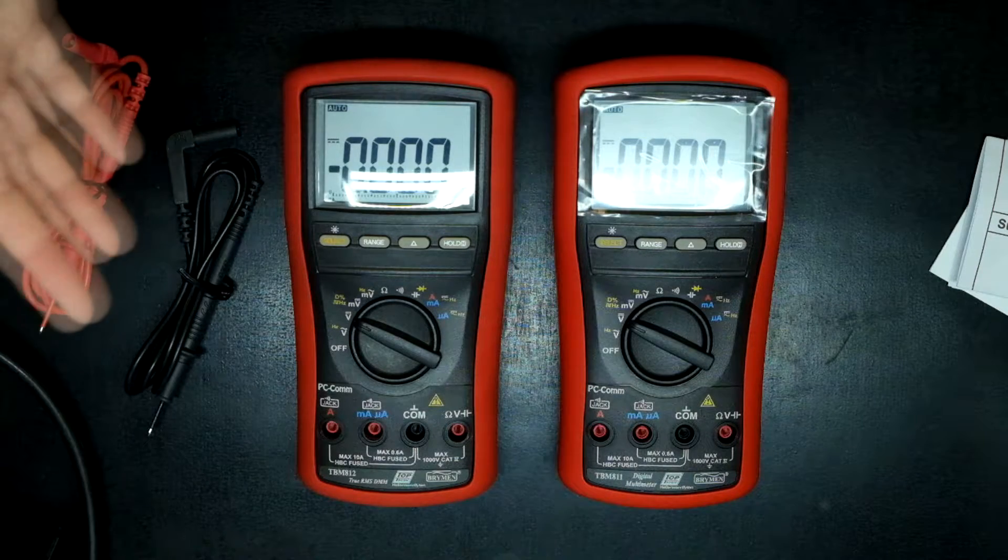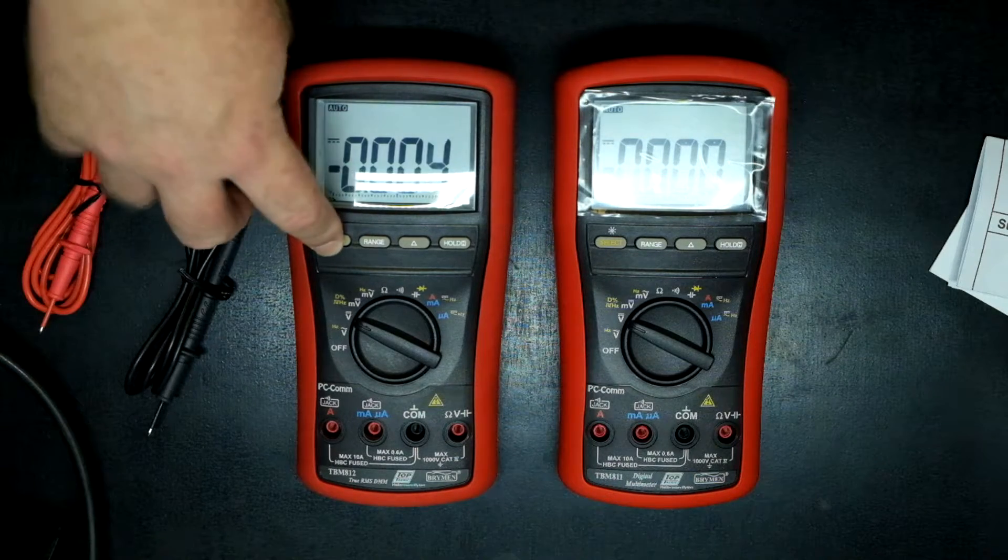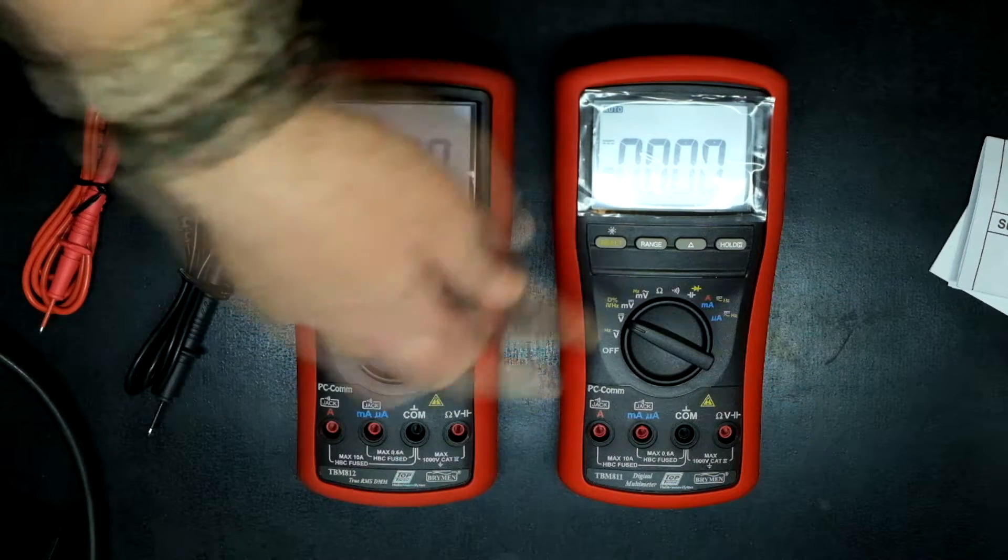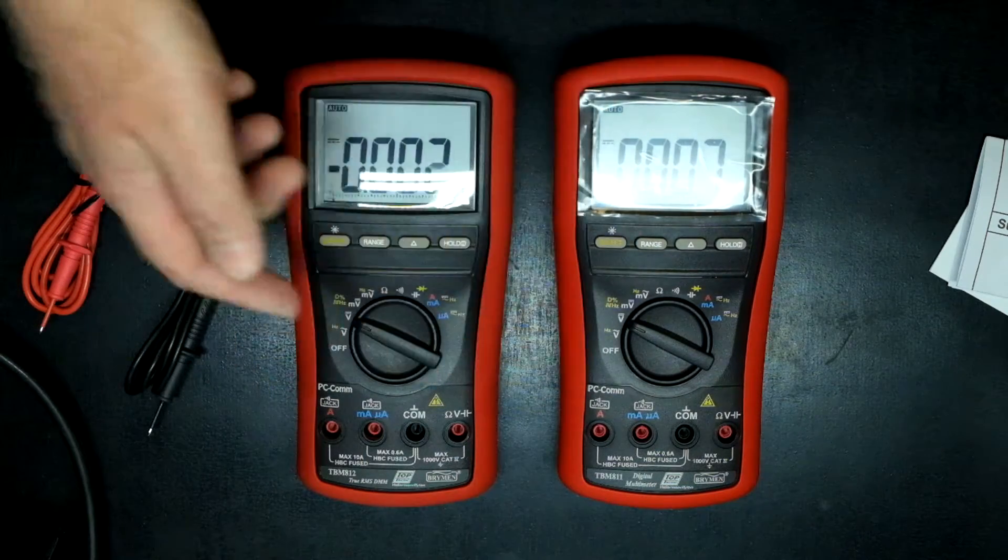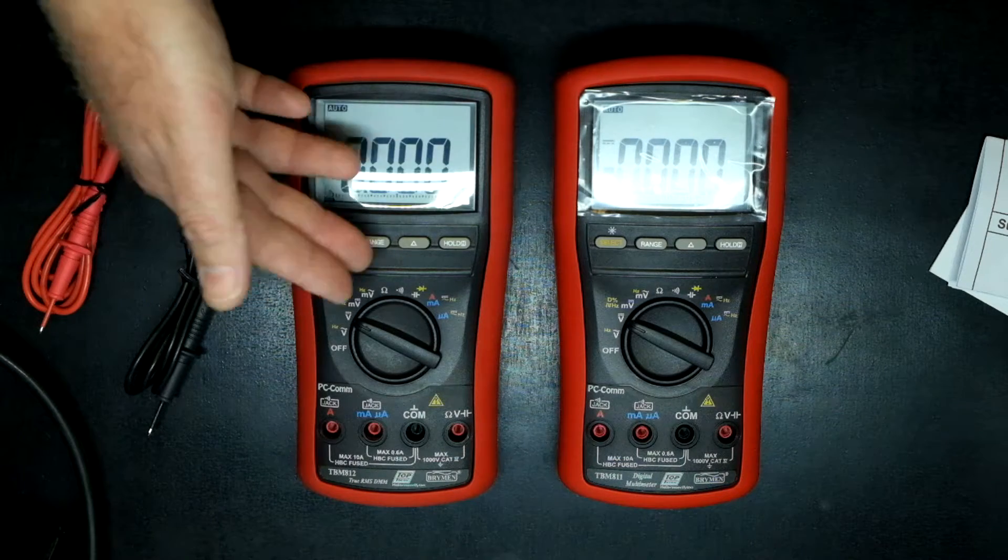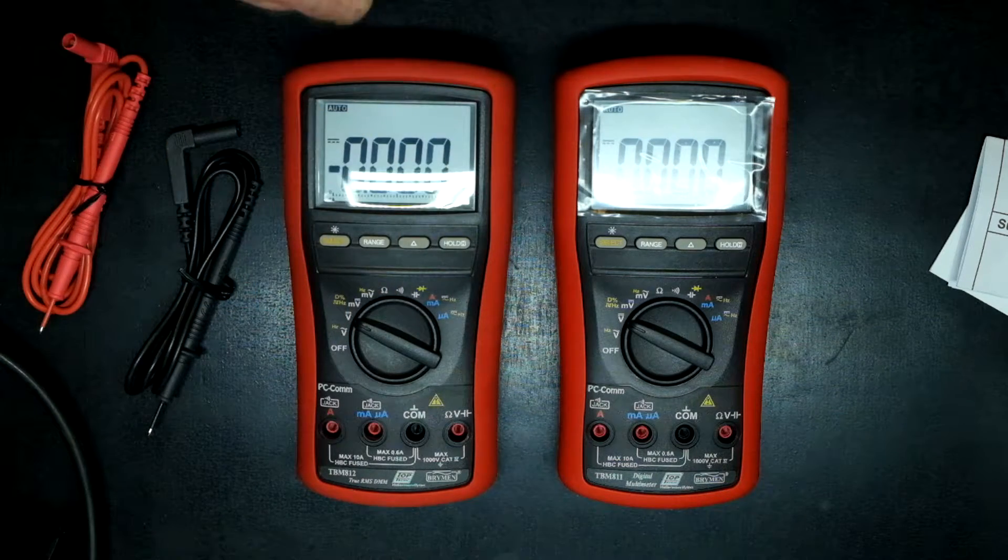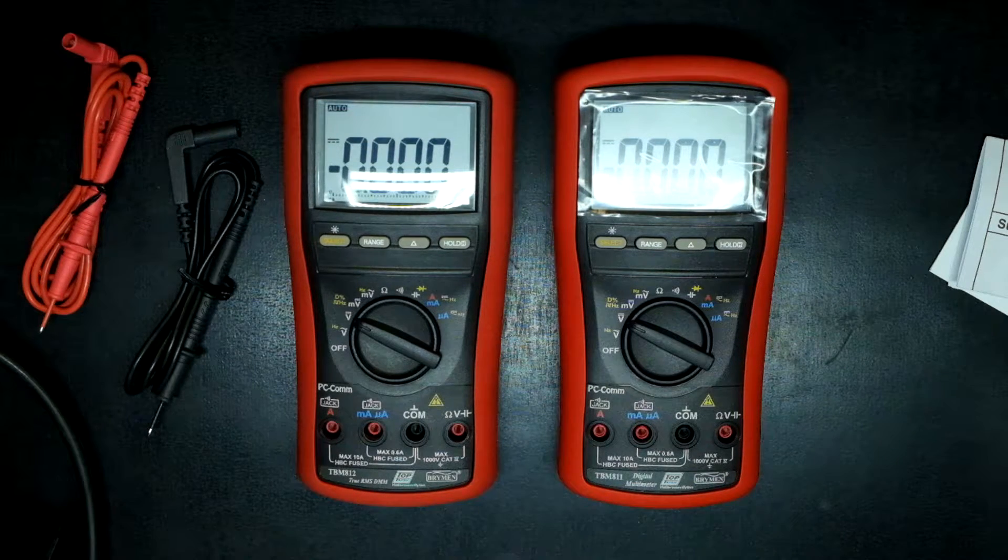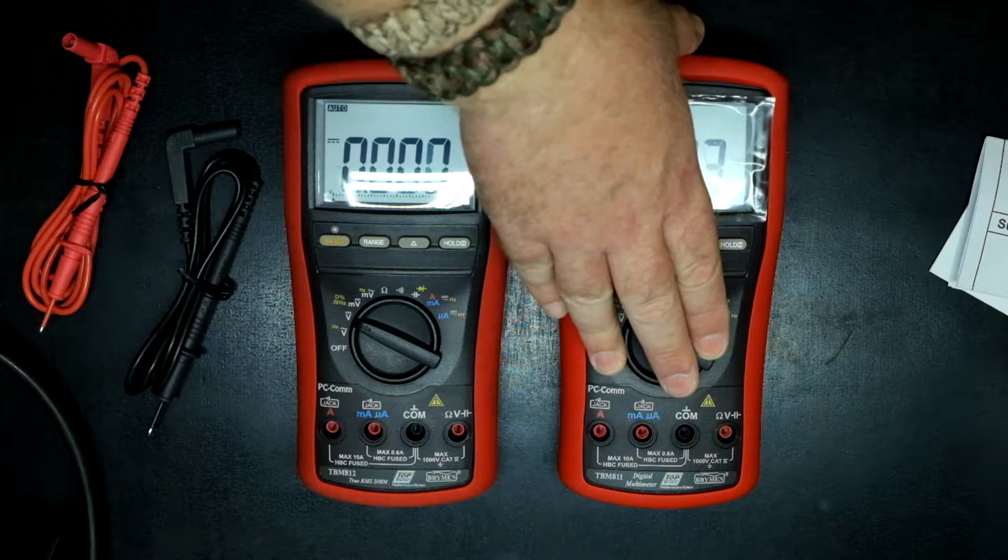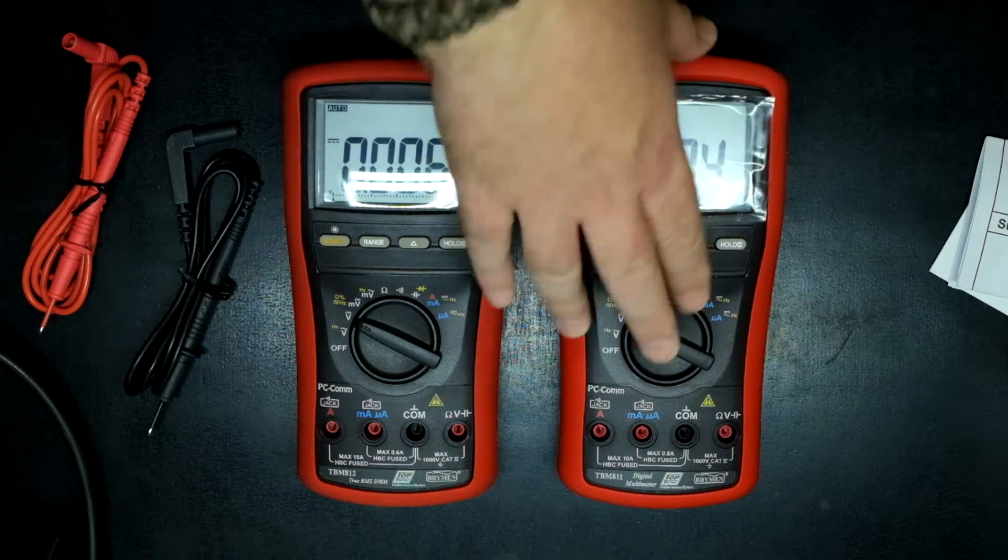As far as doing a comparison, we can check out the backlights and see the same results on both meters. We can check all the functionality. Everything's going to be exactly the same except for the true RMS function. So let's go straight back and do some comparisons with the 829.